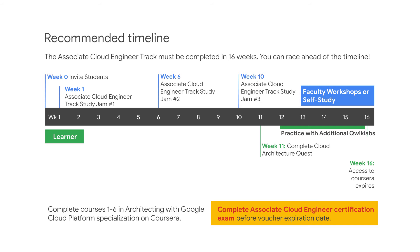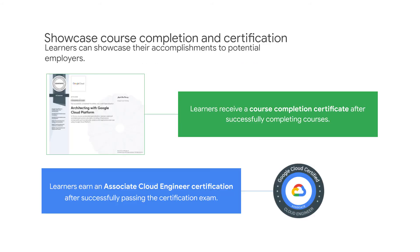Students can definitely race ahead of the timeline. Learners completing the Architecting with Google Cloud Platform specialization will earn a Coursera completion certificate, which can be shared with prospective employers and a professional network. The Associate Cloud Engineer certification exam objectively measures an individual's ability to demonstrate the critical job skills required for the role. The exam duration is two hours, the format is multiple choice and multiple select, and this exam must be taken in person at one of our testing center locations. For more details, visit the Associate Cloud Engineer certification webpage.